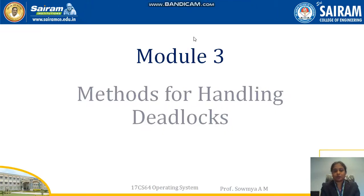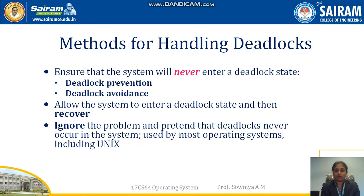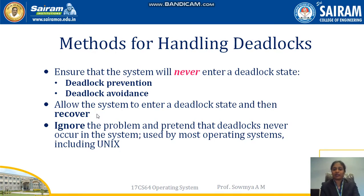The next topic in module 3 is methods for handling deadlock. We have three methods: first, make sure there is no deadlock state by using prevention and avoidance; second, recover — if you cannot prevent or avoid the deadlock, recover the process from that deadlock situation; third, ignore — if you cannot recover, pretend there is no deadlock. This is the most common method used in most operating systems including Unix.